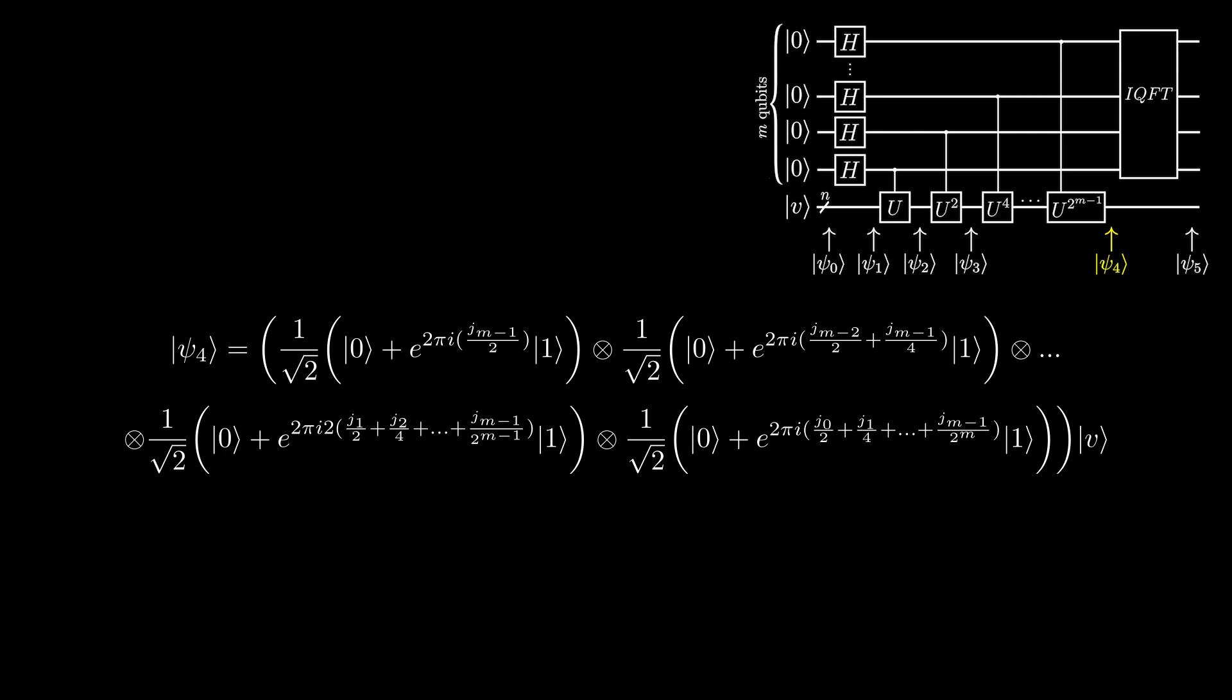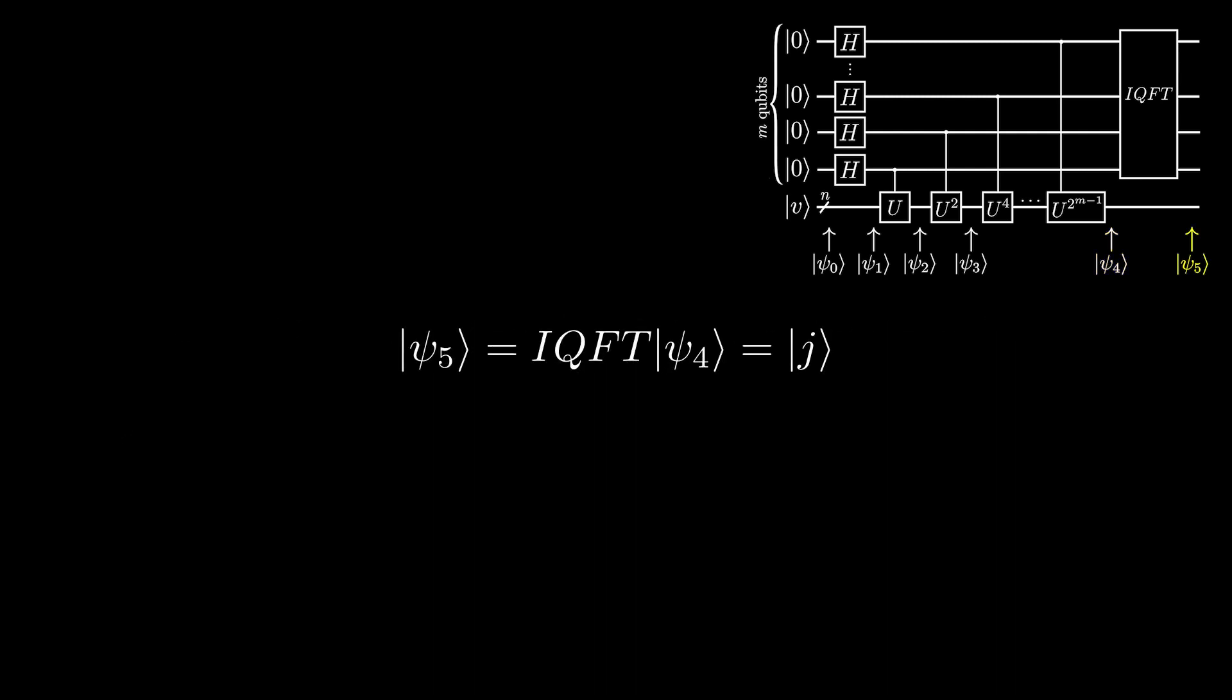This is the same state as if we were to apply the quantum Fourier transform to the state j. So, when we apply the inverse quantum Fourier transform, we end up with the state j. All we need to do is measure the state, and we've approximated j to m bits.